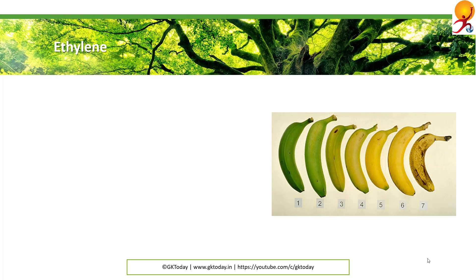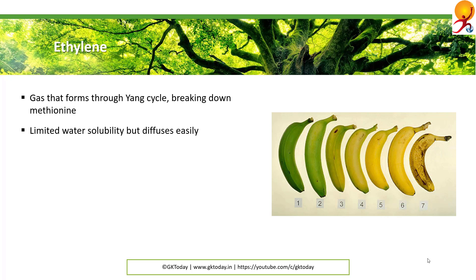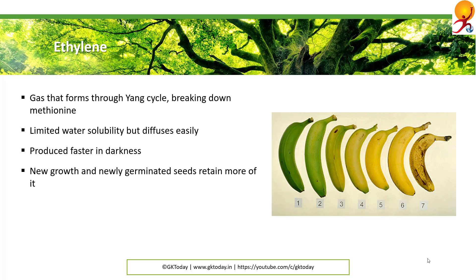Moving on to ethylene. Ethylene is a gas that forms through the Yang cycle from the breakdown of methionine, which is present in all cells. Ethylene has very limited solubility in water and does not accumulate within the cell but diffuses out of the cell and escapes out of the plant. Its effectiveness as a plant hormone is dependent on its rate of production versus its rate of escaping into the atmosphere. Ethylene is produced at a faster rate in rapidly growing and dividing cells, especially in darkness. New growth and newly germinated seedlings produce more ethylene than can escape the plant, leading to elevated ethylene levels inhibiting leaf expansion. As the new shoot is exposed to light, reactions by phytochrome in the plant's cells produce a signal for ethylene production to decrease, allowing leaf expansion.